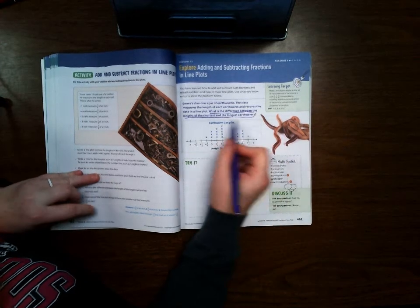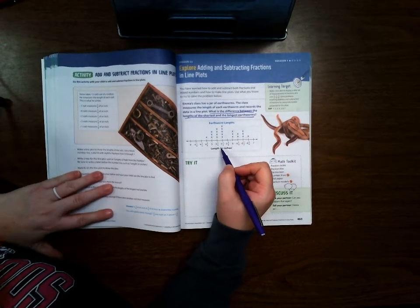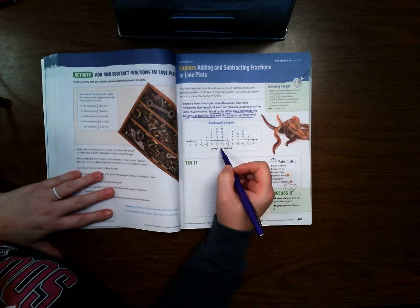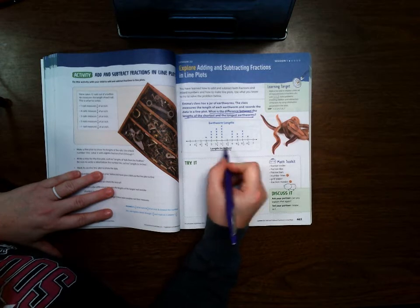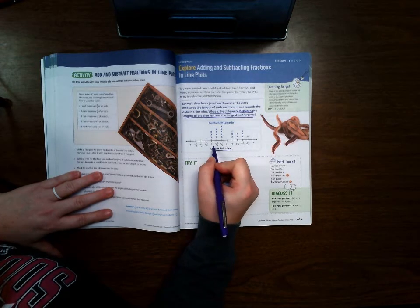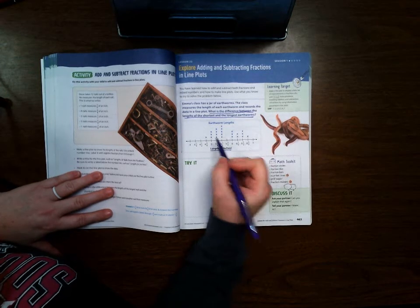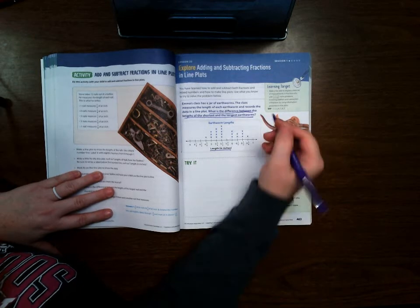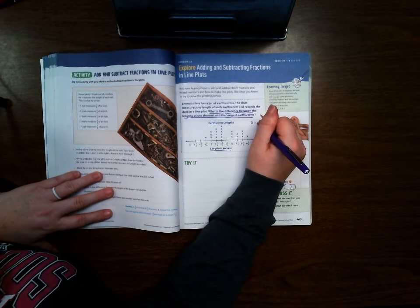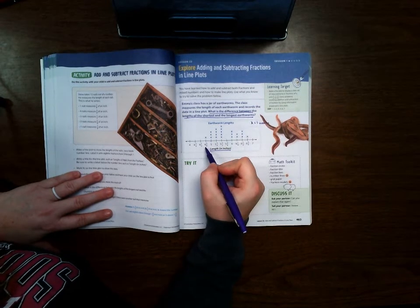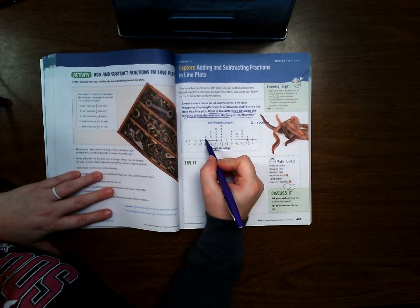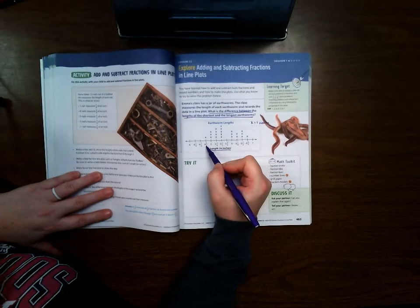So right here, this is a line plot and you see here that it's labeled with length. So these are the lengths of the earthworms and it doesn't have it here, but x equals one worm. So, four and three fourths, that means there's one worm that measures four and three fourths.